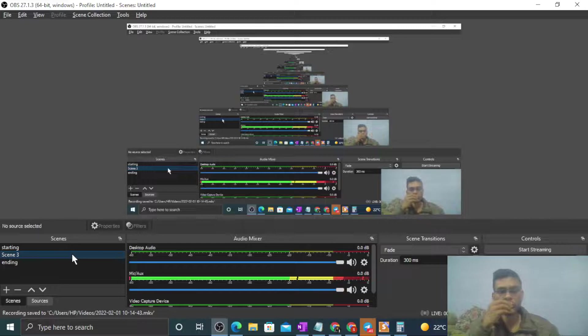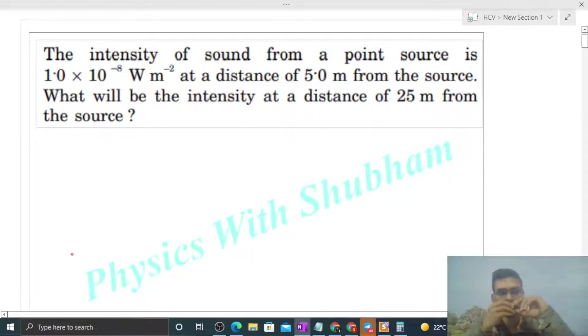Okay, hi everyone. So today let's discuss one interesting problem. It says the intensity of sound from a point source is 10 raised to the power minus 8 watt per meter square at a distance of 5 meters from the source. What will be the intensity at a distance of 25 meters from the source?